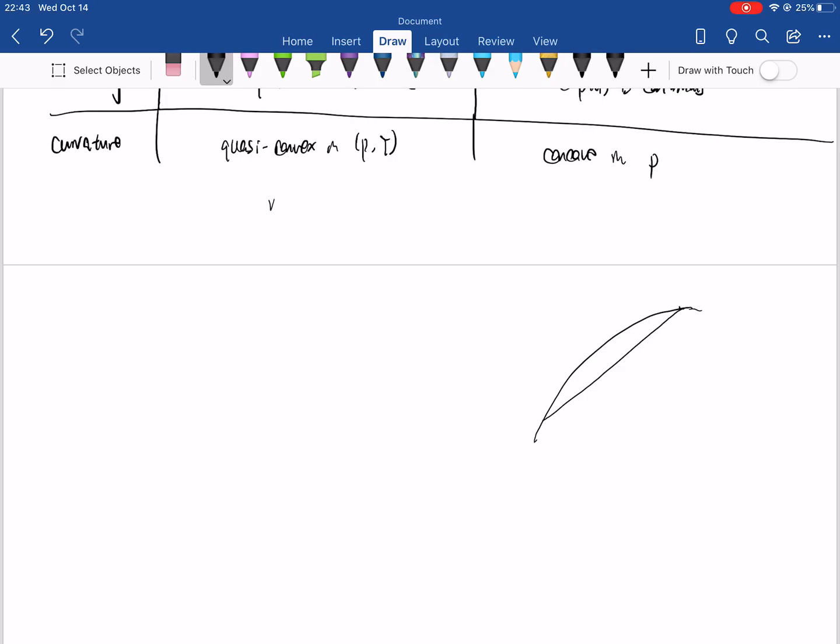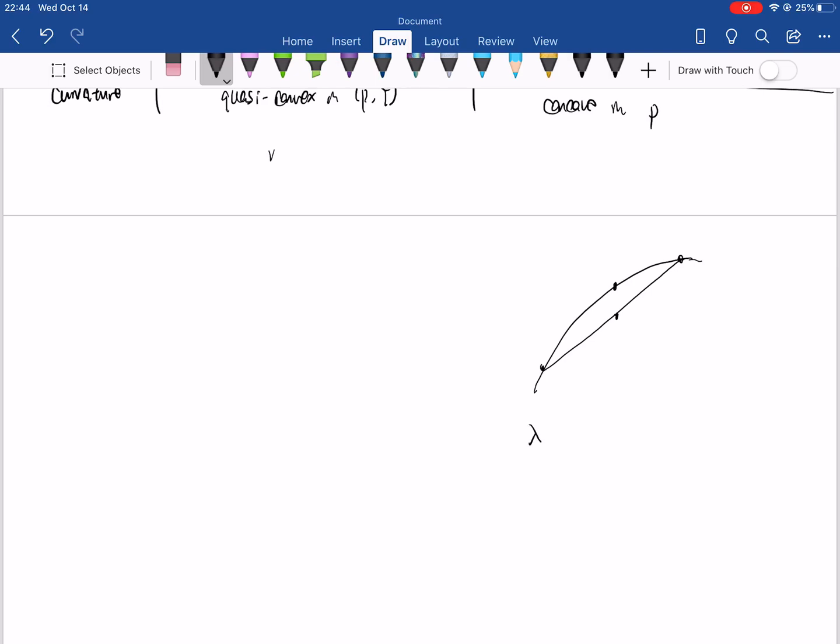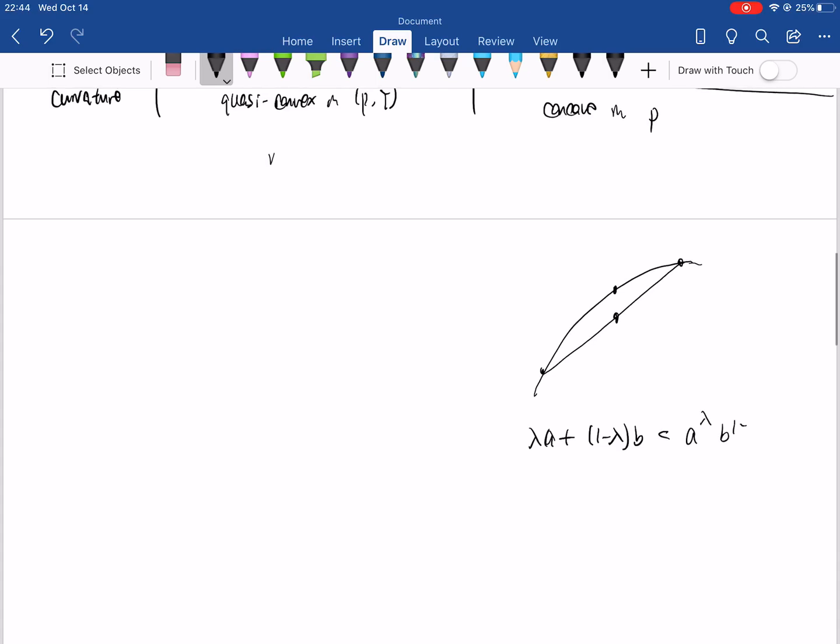That's saying λa + (1-λ)b, that gives you this point, is less than a^λ · b^(1-λ). So this is where the Cobb-Douglas stays. This is also saying that the arithmetic average would be less than the geometric average. This corresponds to the geometric average and this corresponds to the arithmetic average.